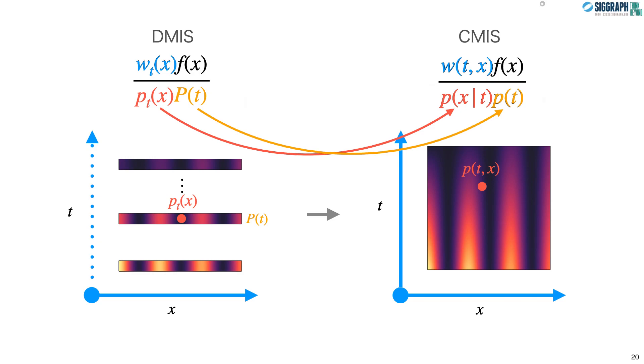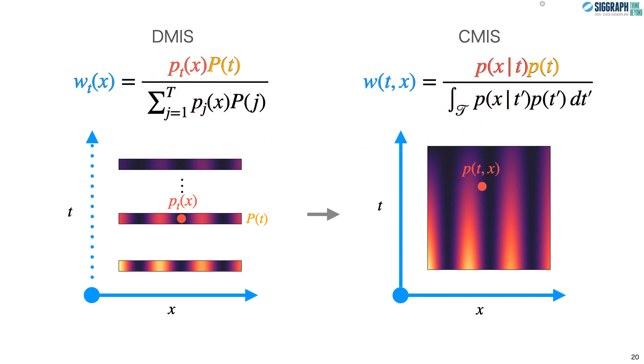Similar to DMIS, CMIS has a balance heuristic that is provably optimal, and we provide a proof in the paper. Here, what was a sum over the techniques becomes an integral.